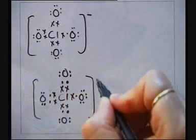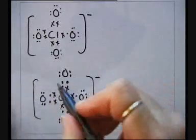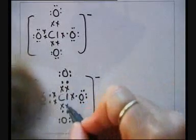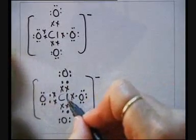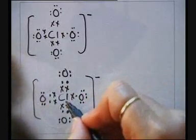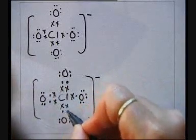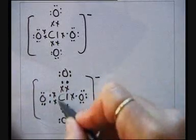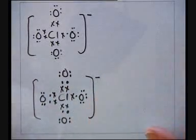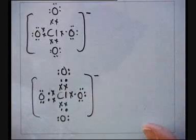The Chlorine atom with d orbitals can form an expanded octet. Indeed, we have 2, 4, 6, 8, 10, 12, 14 electrons around the central Chlorine atom.